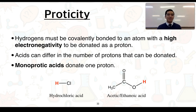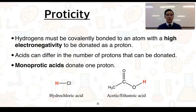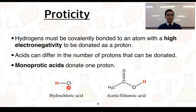To become donatable, hydrogens need to be covalently bonded to an atom with quite high electronegativity, meaning that atom has a strong attraction for the shared electrons, so hydrogen can potentially lose its electron and form H⁺ — a proton. Monoprotic acids are acids that can only donate one proton. Hydrochloric acid and acetic or ethanoic acid are examples — the donatable hydrogens are bonded to electronegative atoms: chlorine and oxygen respectively.